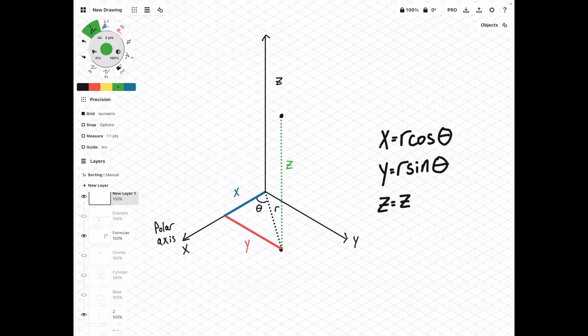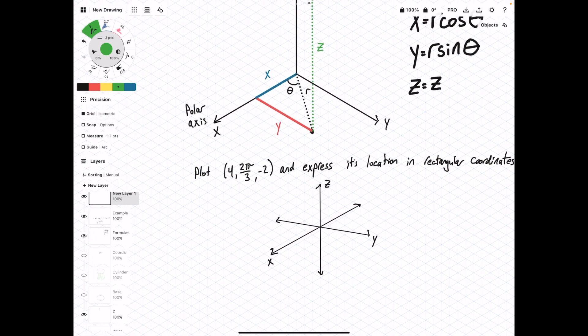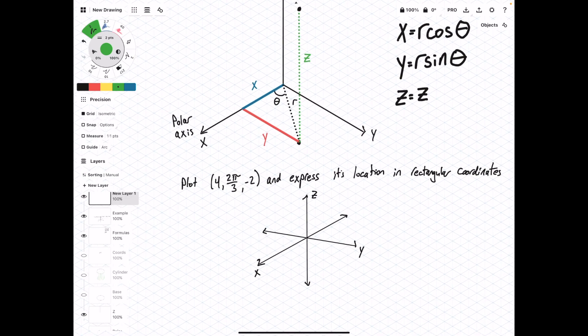All right, so now what we want to do is take a look at an example here. Leave the formulas on screen. In this question, we say plot 4, 2 pi over 3, negative 2, and express its location in rectangular coordinates. So we have this little angle value here, which is a giveaway that this is a cylindrical coordinate.